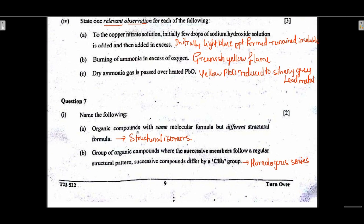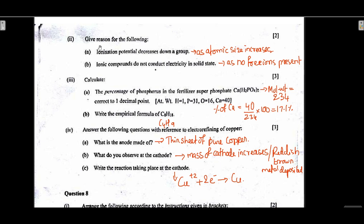Question 7: Organic compounds with the same molecular formula but different structural formulas are called structural isomers, or simply isomers. A group of organic compounds is called a homologous series. Give reasons: ionization potential decreases down a group because atomic size increases — more shells are added, so atomic size increases and it becomes easier for the atom to lose an electron, hence ionization potential decreases.